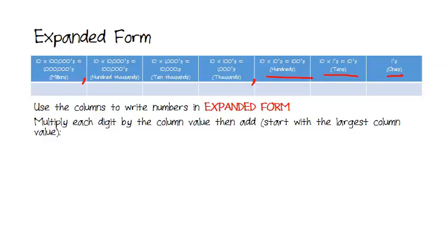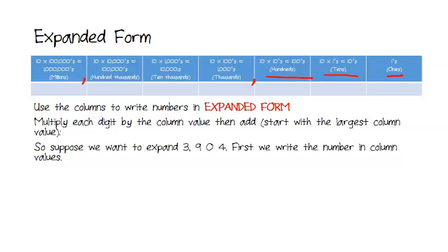In other words, we just multiply each digit in the column by the column value and then add them all up. And you always start with the number in the largest column value. So, let's look at an example.